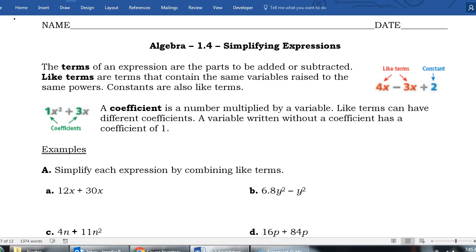If your number has no variable attached to it, that is a like term with another number with no variable attached to it. Generally when we simplify expressions, we combine all of the like terms to get the simplest possible.